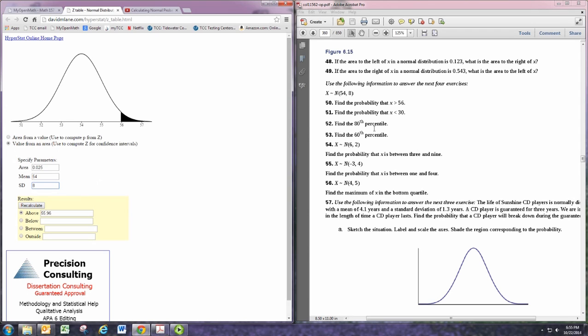Let's find the 80th percentile. We specify the area as a decimal, which would be 0.8. Percentile refers to an area below, or less than, the value of the random variable.